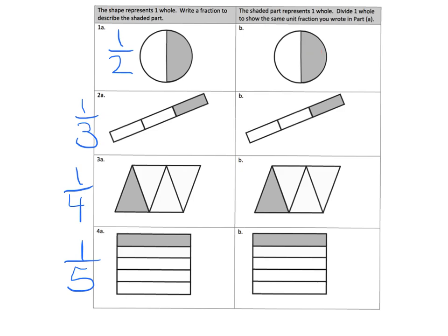Now over here, they're saying now if the shaded part represents one whole, we're supposed to cut this to identify a half. So if this shaded part equals a whole, then I'm going to cut this right here straight down the middle and that gives us a half and a half — and that's what we're supposed to do. In the same way, since our fraction is a third, we're supposed to think of this as one whole and then cut it into thirds — one, two, three. There's my thirds, and I'm supposed to label one-third, one-third, one-third.